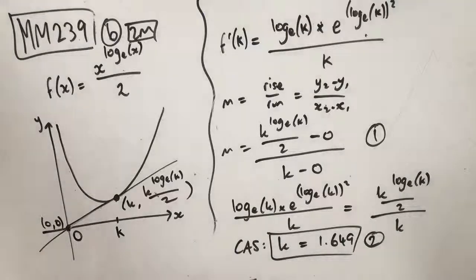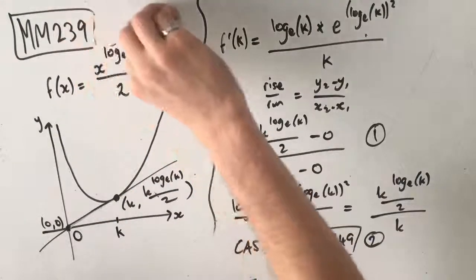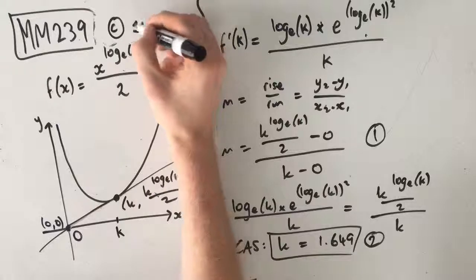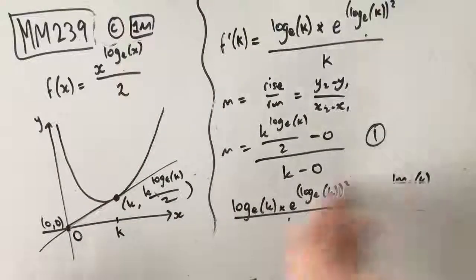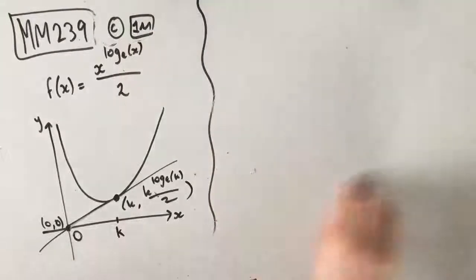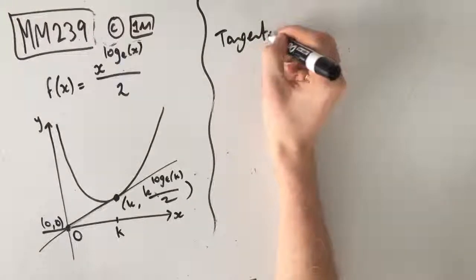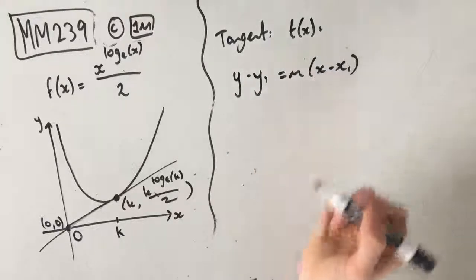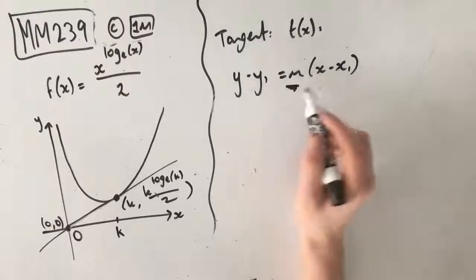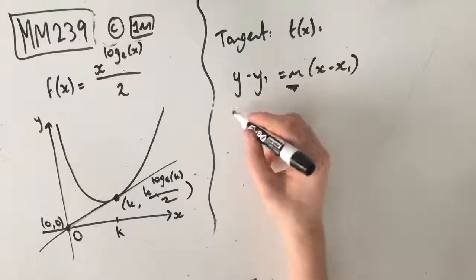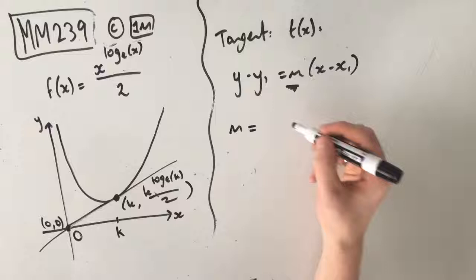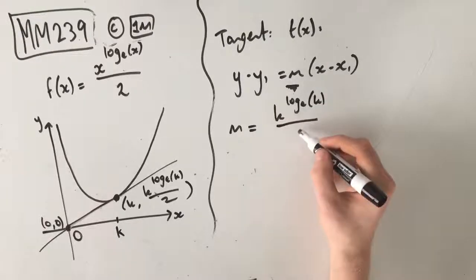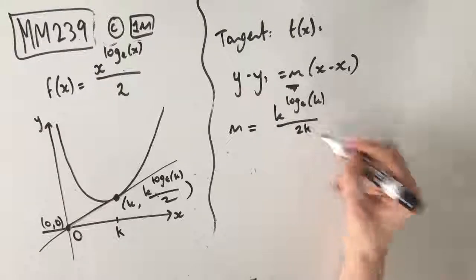Let's move on to part C, which is simply a one-mark question asking us to find the rule for the function t of x, giving any values correct to three decimal places. We'll use our tangent equation y minus y1 equals m times x minus x1. We need the gradient of the tangent and a point on it. Our gradient, according to the previous question, is k to the power of log e of k over 2, all over k.